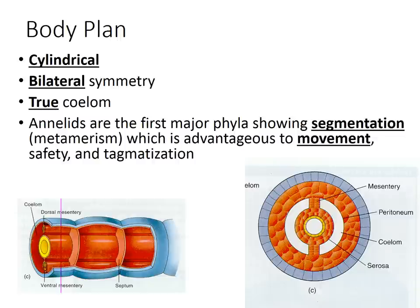General body plan: annelids are all cylindrical, they have bilateral symmetry, and they do have a true coelom. These are the first phylum to show up in evolution with segmentation, which gives them an advantage for movement and allows their body to specialize even more than organisms have already.